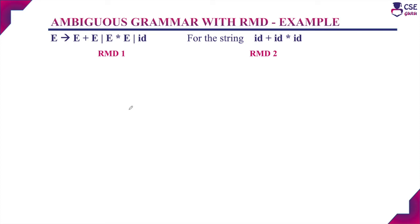Next, example for ambiguous grammar by deriving more than one rightmost derivation. The grammar is E → E + E | E * E | id. We need to derive the string id + id * id. For the first rightmost derivation, we apply the production E → E + E.